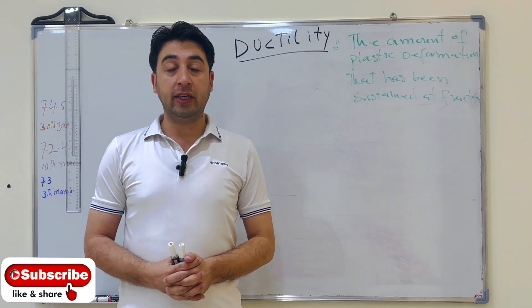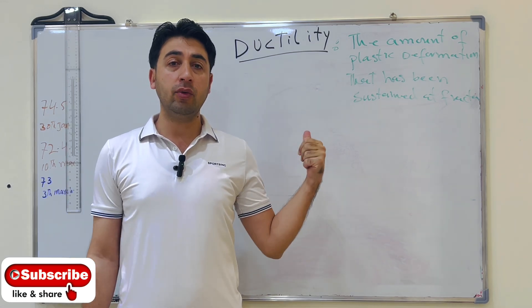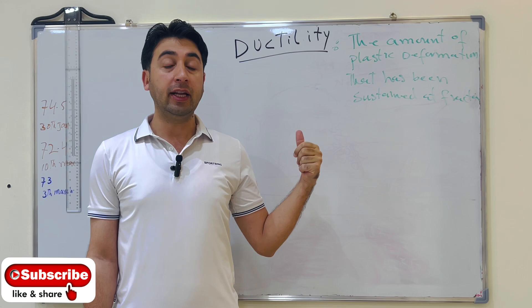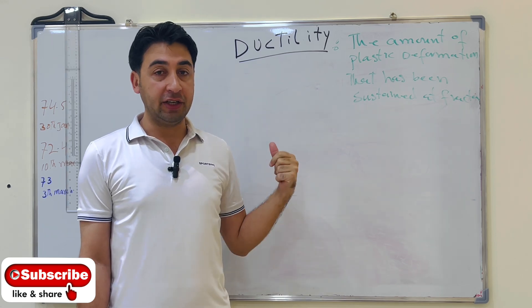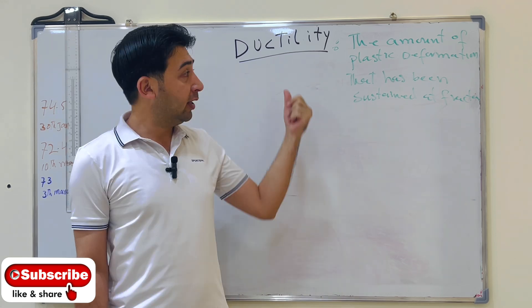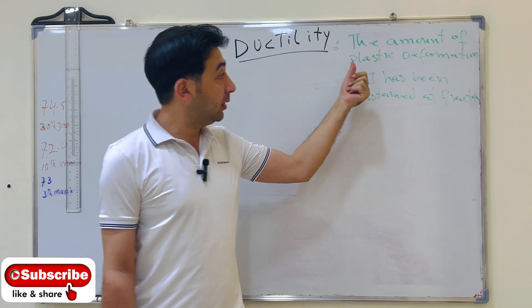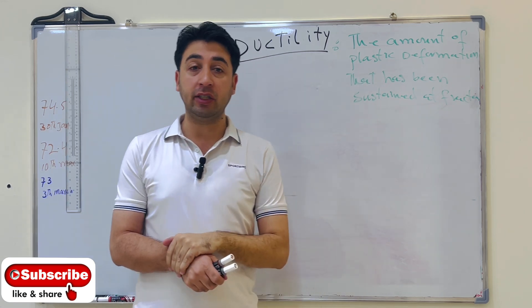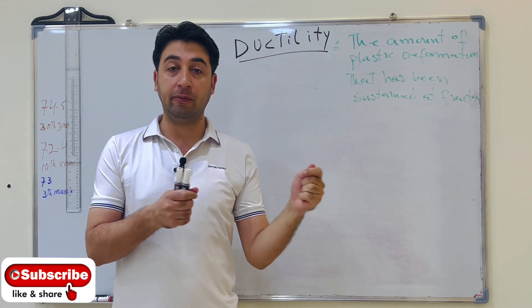Hello everyone, welcome to the next video of material science. Here we will discuss another mechanical property which is ductility. Now what is ductility? From the definition, it is the amount of plastic deformation that has been sustained at fracture.